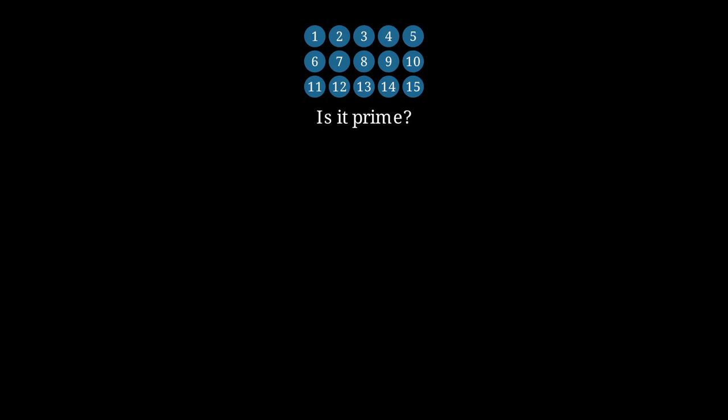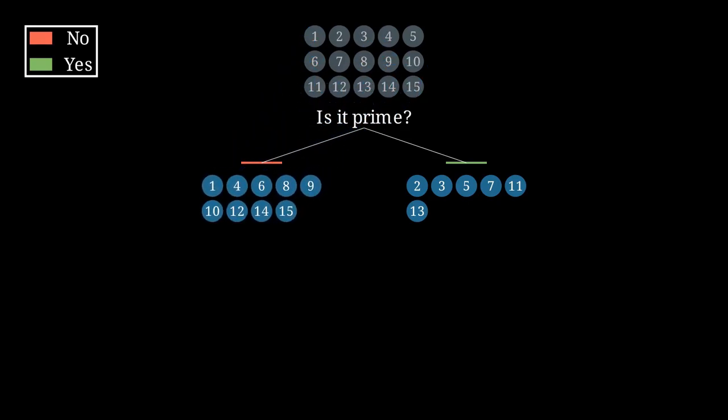The responder can now potentially answer either yes or no. We'll represent this with two branches from the colored balls. If they answer yes, we know that the secret number has to be prime, so we'll move the prime numbers into the yes branch. But if they answer no, then we know the secret number can't be prime, so we'll put all the rest of the balls into the no branch. This gives us a nice visual representation of exactly what we know in each case.